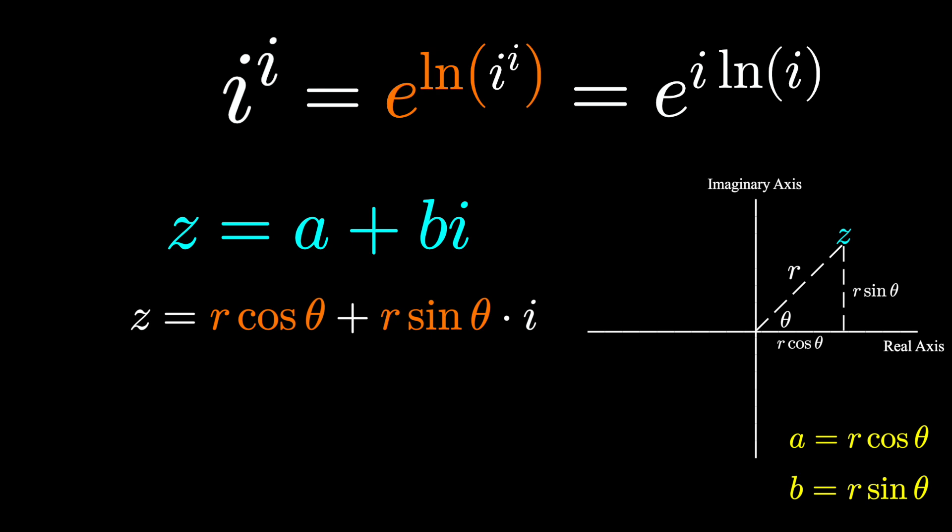We can factor out that r, which is the hypotenuse of the triangle. And hey, look at that, there's the famous Euler's formula. Cosine theta plus i sine theta is e to the i theta. So any complex number can be represented as r e to the i theta, r being the distance from the origin, and theta being that angle measured counterclockwise from the positive x axis.